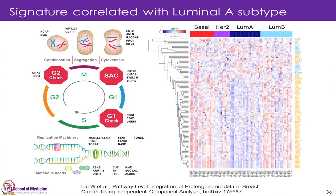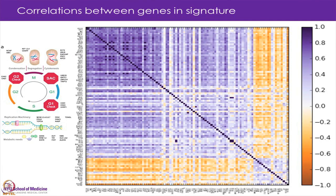In that signature we see that there are a lot of genes associated with the cell cycle and most of them are down — these cell cycle genes are much lower in this signature. This is actually a well-known signature of luminal A, but we got it through an unsupervised analysis and were able to recover it without making any initial assumptions. If we look at the correlation between the different genes in the signature, we again see that most of the genes are positively correlated, with another group that is internally positively correlated but anti-correlated to the rest.